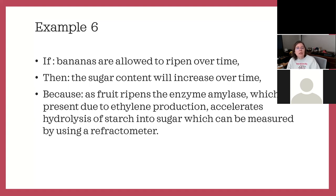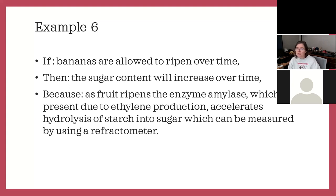Example six: if bananas are allowed to ripen over time, then the sugar content will increase over time, because as fruit ripens, the enzyme amylase, present due to ethylene production, accelerates hydrolysis of starch into sugar, which can be measured using a refractometer. You can always use time as your independent variable, which is good. Sugar content increasing over time is measurable. This is a good project.